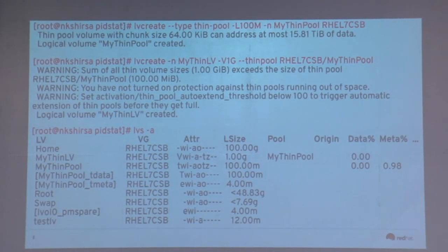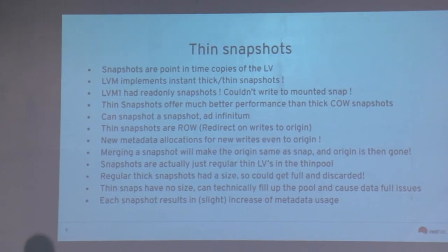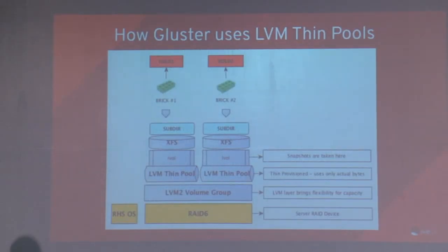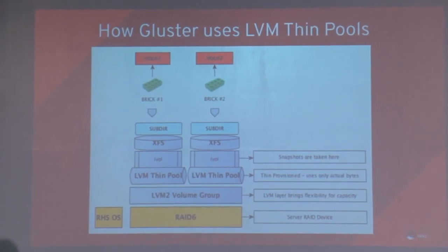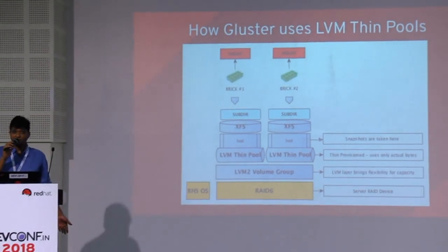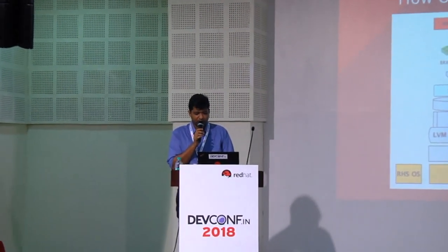Gluster uses thin pools primarily for snapshots — they can't afford thick snapshots, so they use thin pools. At the LVM layer, snapshots are taken; on LVM there's XFS with directories used as bricks, then exported as volumes by Gluster. The risk is that users may not have auto-extend on and can run out of metadata or data space. RAID may or may not exist below this stack.